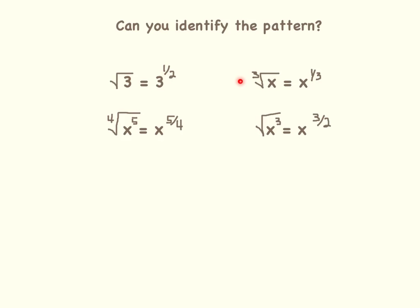Now let's look at this example. This time our radical sign has a 3 in front, so we are taking the cube root of x, which means we're taking the third root of x. Remember, x has an invisible exponent of 1. So looking at the right side of the equation, the denominator of the exponent, which is 3, comes from taking the cube root of x, and the numerator, the 1, comes because we're taking x to the first power. Are you starting to see a pattern now?